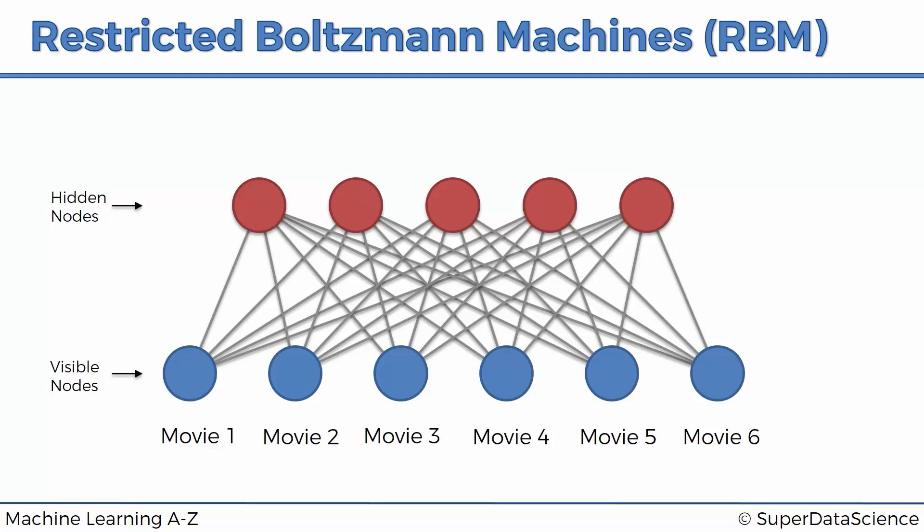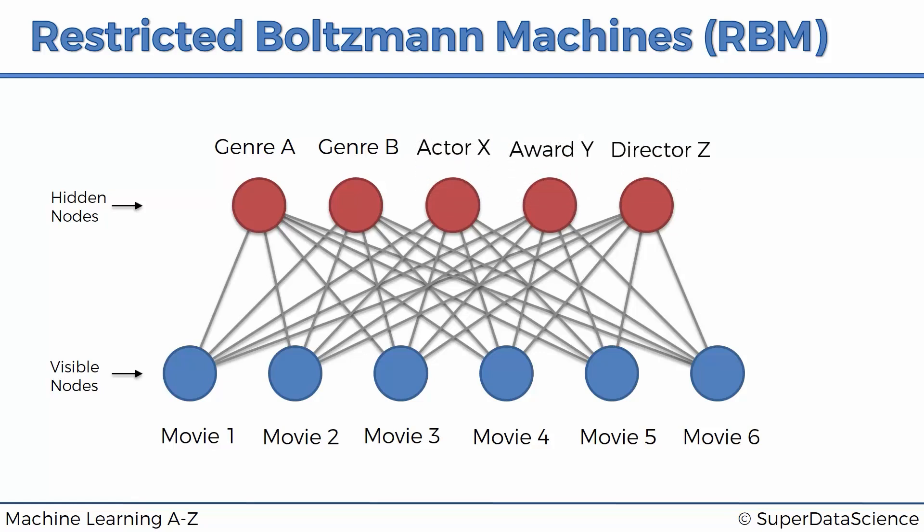Through the training process, the restricted Boltzmann machine might identify that genres of movies are important features — for instance genre A, B, C, D, and E. The important thing to understand is that it doesn't know these are genres; it's just identifying certain features. It could also identify that other important features include an actor like Kevin Costner, an award like an Oscar, a director like Robert Zemeckis. The key question is: what does it mean when a feature is identified as important?